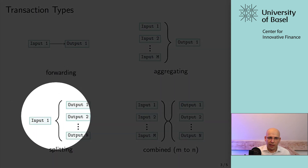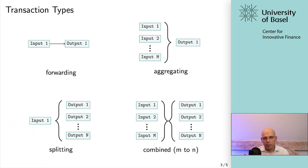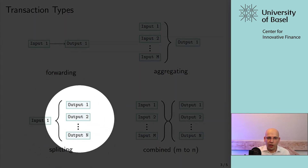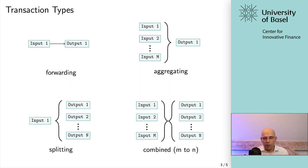The opposite is a splitting transaction. You have a single input — one unspent transaction output used as an input — and you create n or more outputs with their very own spending conditions. For example, output one can be spent when somebody fulfills condition A, output two can be spent when somebody fulfills condition B, and so on. That gives you quite some flexibility in how you can create your transactions.